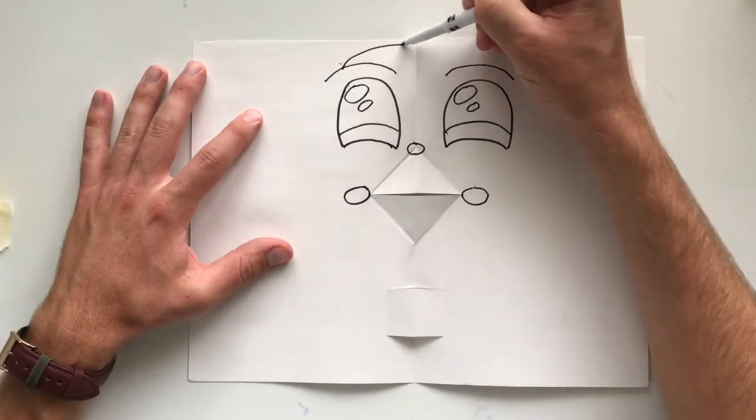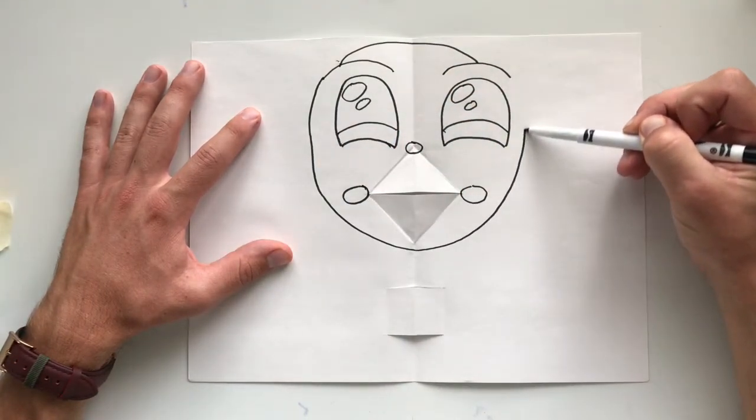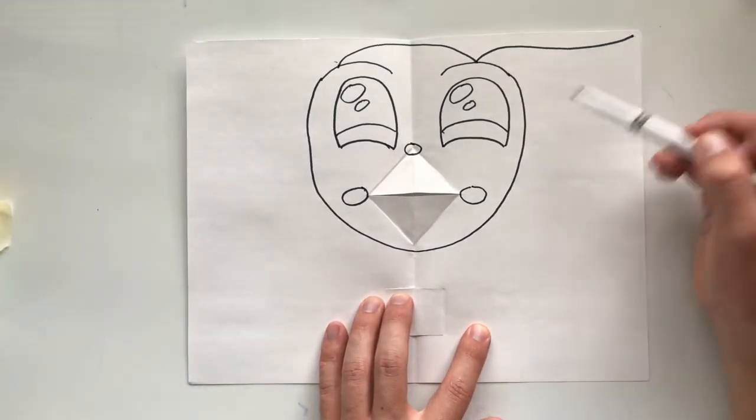Draw two lines for the eyebrows of Yoda. One more curved line for the top of his head. Now we're going to connect this. This is going to go all the way around and back up.